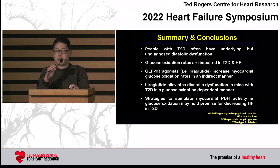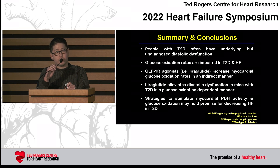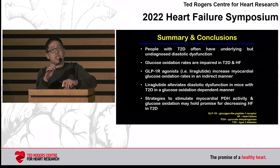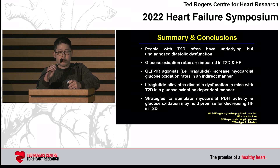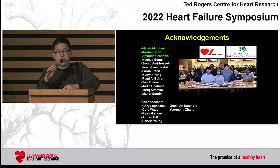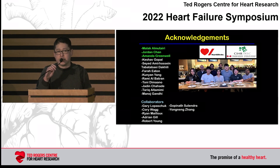Just to quickly summarize: people with type 2 diabetes are characterized by diastolic dysfunction and low glucose oxidation rates, which can be improved with liraglutide or a GLP-1 receptor agonist. We think strategies to increase glucose oxidation or target PDH might be a novel therapy for type 2 diabetes and possibly HFpEF. I'd like to again acknowledge the trainees who did this work — Malak, Alma Tyree, Jordan Chan, Amanda Greenwell — as well as our many collaborators and funding sources. Thank you for your attention, and I'm happy to answer questions during the discussion after the next two speakers.